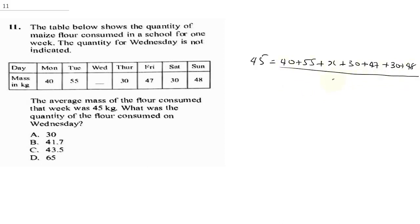All this divided by 1, 2, 3, 4, 5, 6, 7. So this would be the same thing as 45 is equal to, we are going to sum the total, and this would give us 250. So this would be 250 plus x all over 7.